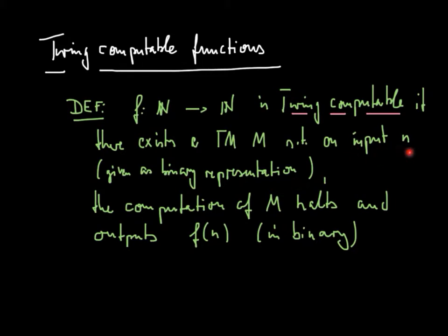So on input N, the computation of M halts. Remember, a Turing machine program has a specific halting state. So if during the computation of M on this input here, M reaches that halting state, then the output, and remember that was the sequence of bits immediately to the right of the current cell, is f of N. And again, we assume that this is given in binary.